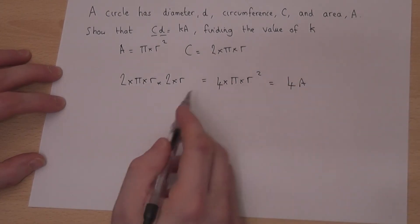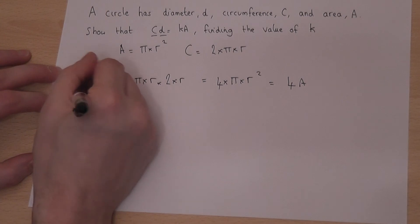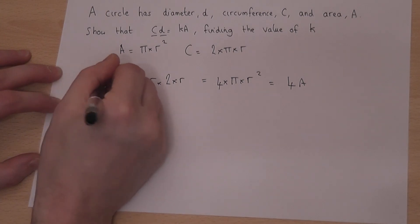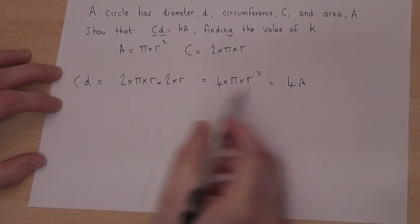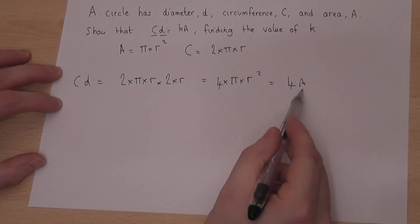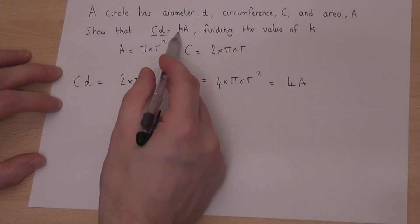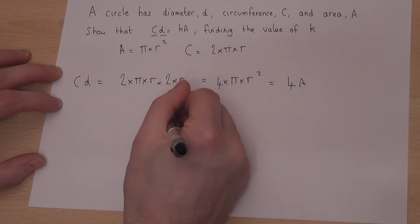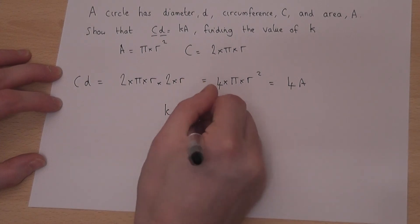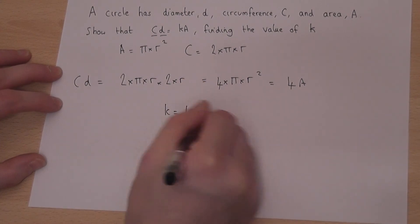So I've shown that c times d is equal to 4 times a, so k just equals 4.